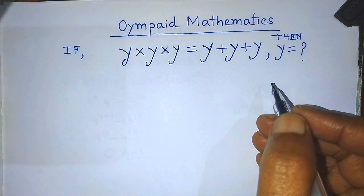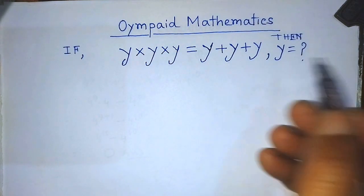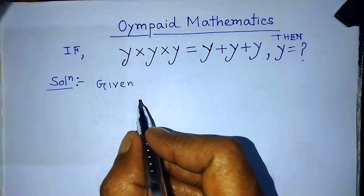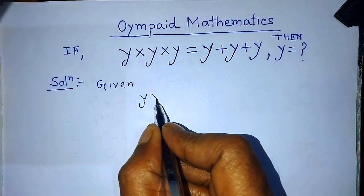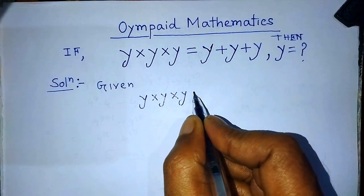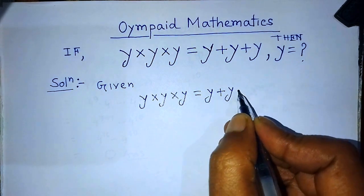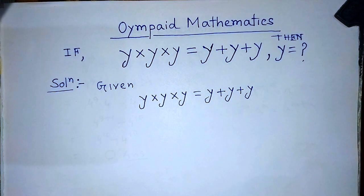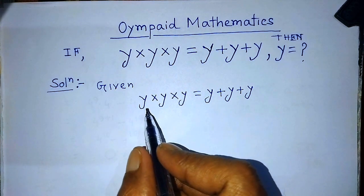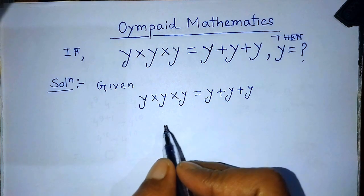Today in this video, I am telling you how to find the value of y from this equation. Our given algebraic equation is y times y times y is equal to y plus y plus y. On the left hand side, y times y times y — so that is y to the power 3.